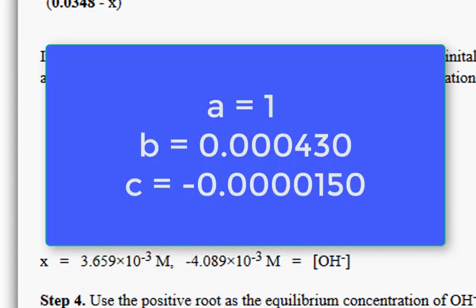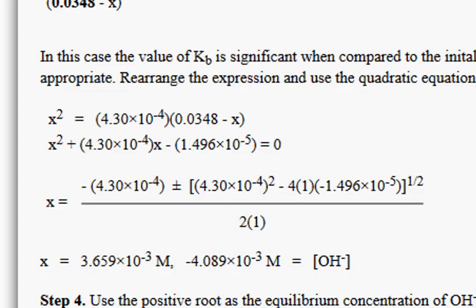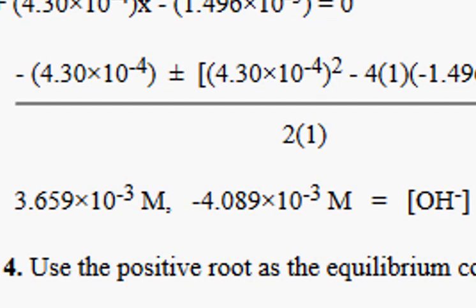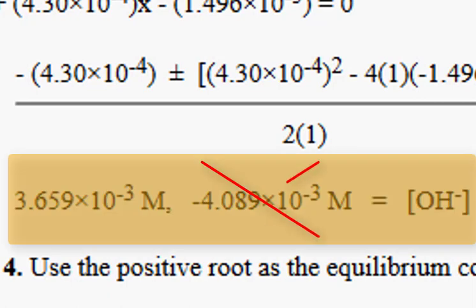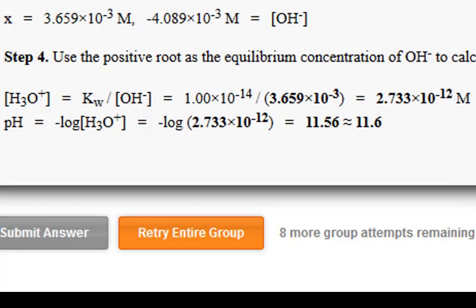I then substituted those three coefficients into a quadratic formula to generate two values of x. The positive value of x will be used to represent the hydroxide ion concentration. From the hydroxide ion concentration, the hydronium ion concentration can be determined.